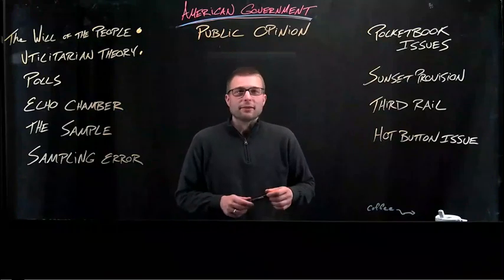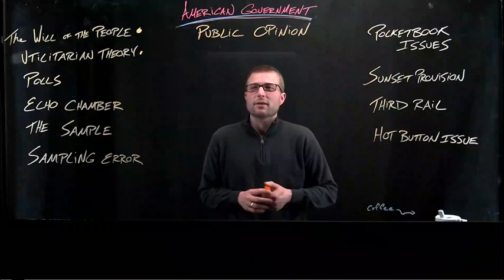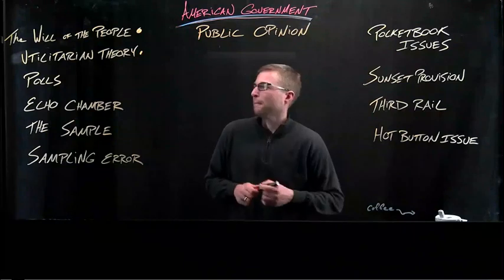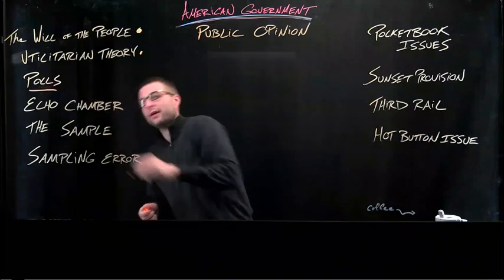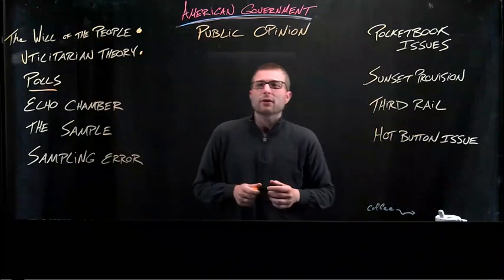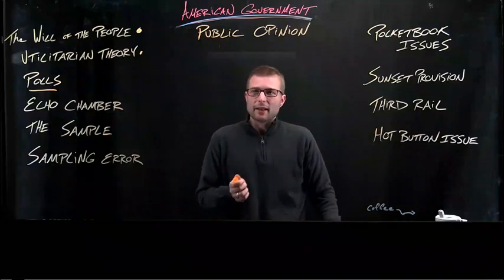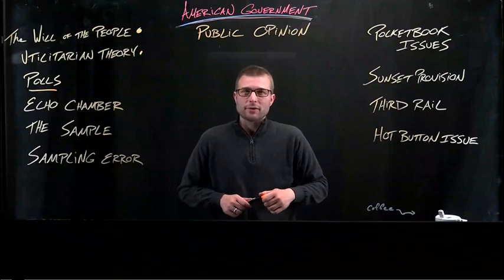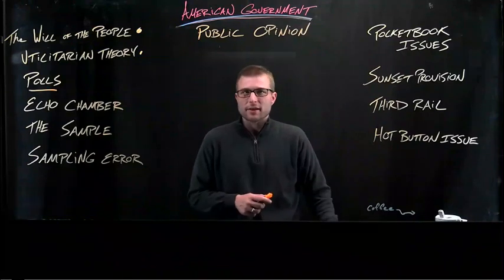The introduction of scientific polling beginning roughly in the 1930s more or less settled the question of how public opinion was to be measured. Polls and surveys gained early and instant credibility when the first ever Gallup presidential poll accurately predicted a landslide victory for Franklin D. Roosevelt over Alf Landon in 1936.